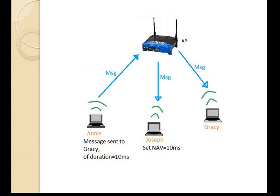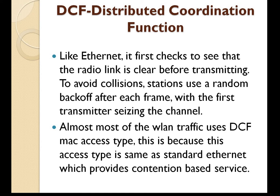If the frame duration is less than the NAV already set, it will not be changed. The DCF is the basis of the standard CSMA/CA access mechanism. Like Ethernet, it first checks to see that the radio link is clear before transmitting. To avoid collisions, stations use a random backoff after each frame, with the first transmitter choosing the channel in some circumstances. The DCF may also use the RTS/CTS clearing technique to further reduce the possibility of collisions. Almost all WLAN traffic uses the DCF MAC access type, because this access type is the same as standard Ethernet, providing contention-based service.